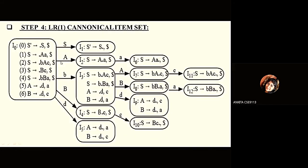Now the most important step: step 4, the LR1 canonical item set. In the LR1 parser, L refers to scanning the input from left to right, R is for using the reverse rightmost derivation in bottom-up parsing, and the '1' is the look-ahead count. We start with the first canonical item set, I0.